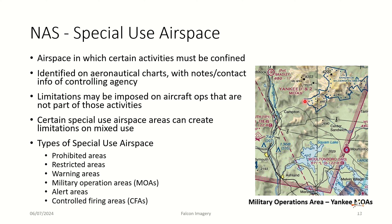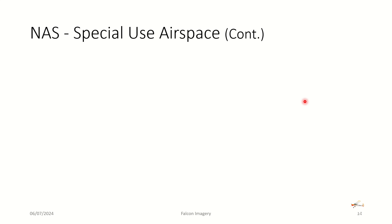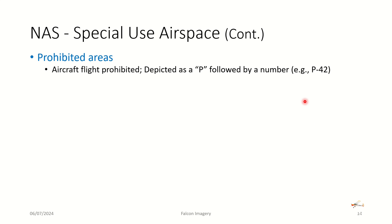Types of special use airspace include: prohibited areas, restricted areas, warning areas, military operating areas, alert areas, and controlled firing areas. Prohibited areas — aircraft flight is prohibited — depicted as a P followed by a number. You're simply not going to be allowed to fly there.